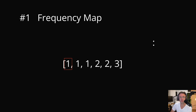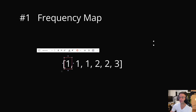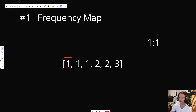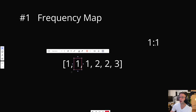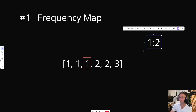The first thing we're going to do is build what's called a frequency map. A frequency map is about as easy as it gets. We're going to iterate through every single number in the array, and for each number we come across, we're going to keep track of its frequency using a key-value pair. So 1 occurs 3 times — we'll put a 3 here for our frequency for the 1.